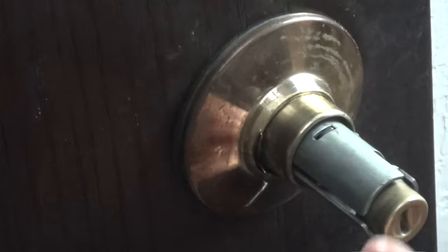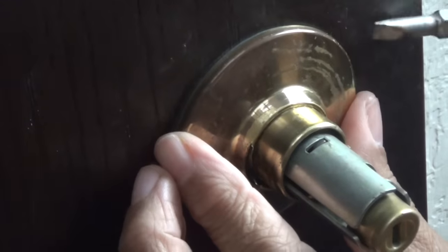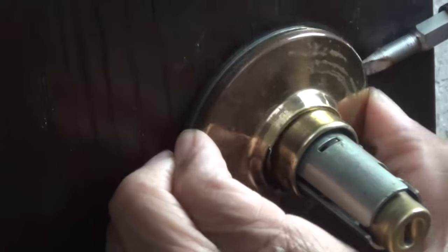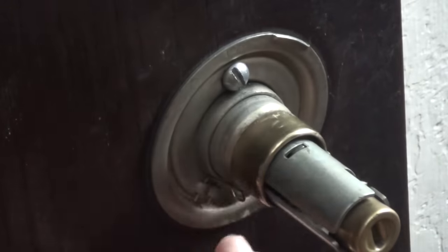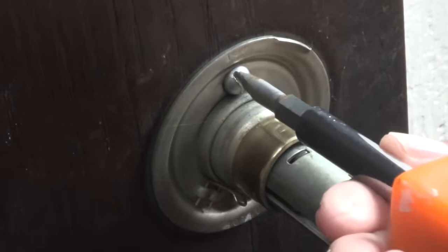There we go. Now that we have the doorknob off, all we have to do is pry this plate away. There we go. There's our two screws, and all we have to do now is loosen them.